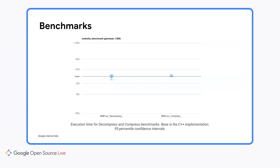Rust was on average 0.3% faster in the decompression benchmark, while it was 0.3% slower in compression. Very importantly, these differences were not statistically significant. Once we looked at the flame graphs, we realized the difference in compression speed must be measurement noise, because both implementations spent almost the entire execution time in Brotli rather than the code being ported — that was over 99.5% for compression and over 60% for decompression. I also measured peak memory usage of both implementations, and the results indicated no significant difference in memory consumption between them.